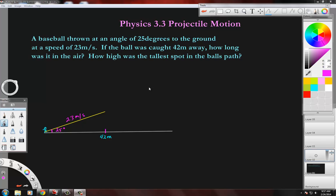Projectile motion: A baseball is thrown at an angle of 25 degrees to the ground at a speed of 23 meters per second. If the ball was caught 42 meters away, how long was it in the air and how high was the tallest spot the ball got?